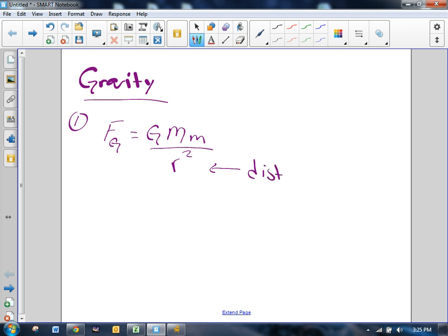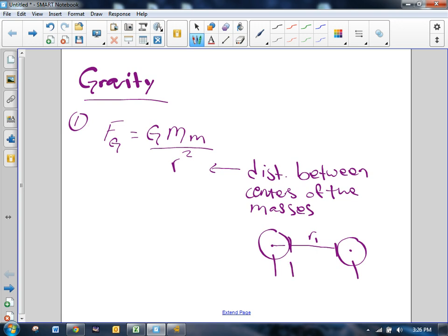Take note, this is the distance between the centers of the masses. What that means is, if you have two spheres separated by some distance, it's not the distance just to their edges. It's actually the distance right to their centers. So keep in mind that it's the distance to the object's centers of gravity, or centers of mass.